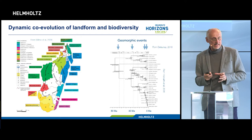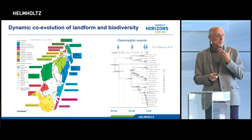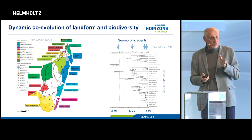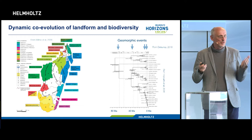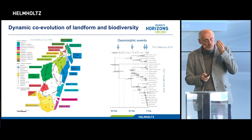There seems to be a link between the shape of the landscape and biodiversity — true for lemurs, plants, most mammals, and other animals in Madagascar. Looking at phylogenetic trees, we can see the timescale at which speciation took place: the different species of lemur diverged not recently, but over the entire geological and geomorphological evolution of the island since it was separated from Africa and India. There is truly a co-evolution of landform and biodiversity.